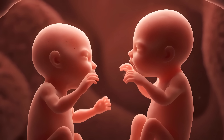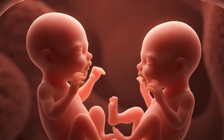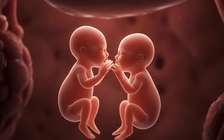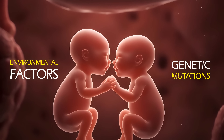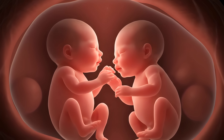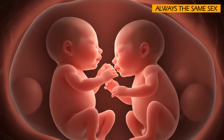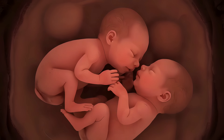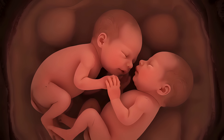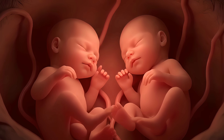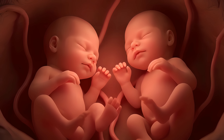Identical twins share nearly the exact same genetic material because they originated from a single zygote. Any differences that emerge are due to environmental factors or very rare genetic mutations that occur after the split. Due to sharing the same genetic information, identical twins are almost always the same sex. They often look remarkably alike, especially in early life, though subtle differences in features, fingerprints, and personalities develop over time due to unique environmental influences both in and out of the womb.